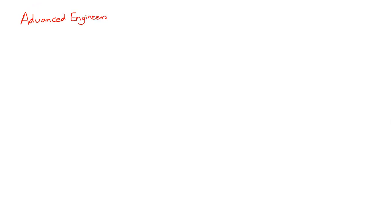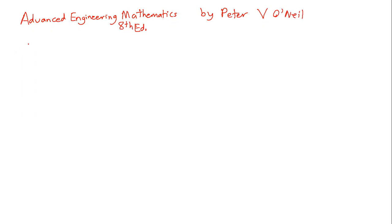We're going to get going with our lecture on the first chapter of our course textbook — Advanced Engineering Mathematics by Peter V. O'Neill, eighth edition. We're going to cover the first two sections. Where we ended in class last time was talking about ordinary differential equations, partial differential equations, and we motivated our discussion by saying that differential equations come out in chemical engineering in many ways.